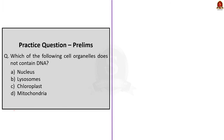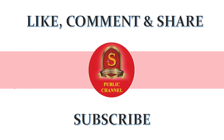The third question asks which of the following cell organelles does not contain DNA. Nucleus, chloroplast, and mitochondria all contain DNA. Only lysosomes do not contain any DNA. So the correct answer is option B. With this, we have come to the end of the discussion. If you like the video, please share it with your friends and don't forget to subscribe to Shankaraya's YouTube channel. Thank you.